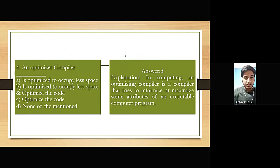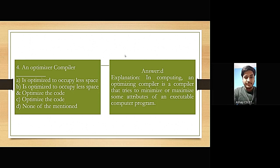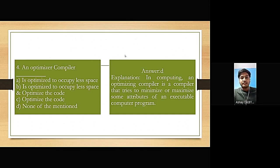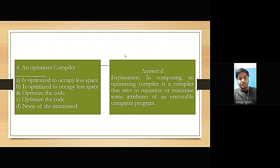Gate question 4: An optimizing compiler is — A) optimized to occupy less space, B) optimized to occupy less space and optimize the code, C) optimizes the code, D) none of the mentioned. The answer is D. An optimizing compiler is a compiler that tries to minimize or maximize some attributes of an executable computer program.